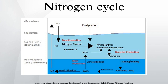Atmospheric nitrogen must be processed, or fixed, to be used by plants. Some fixation occurs in lightning strikes, but most fixation is done by free-living or symbiotic bacteria known as diazotrophs. These bacteria have the nitrogenase enzyme that combines gaseous nitrogen with hydrogen to produce ammonia, which is converted by the bacteria into other organic compounds. Most biological nitrogen fixation occurs by the activity of molybdenum nitrogenase, found in a wide variety of bacteria and some archaea.